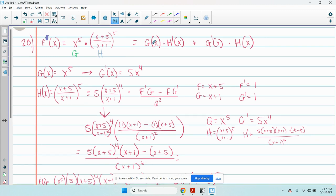So, yep, product rule. There's your product rule. Our first thing is x to the fifth. Our second thing is going to be x plus 5 over x plus 1 to the fifth.